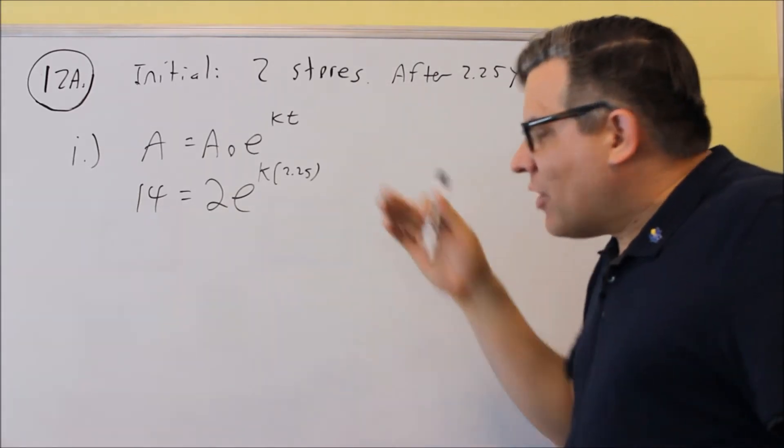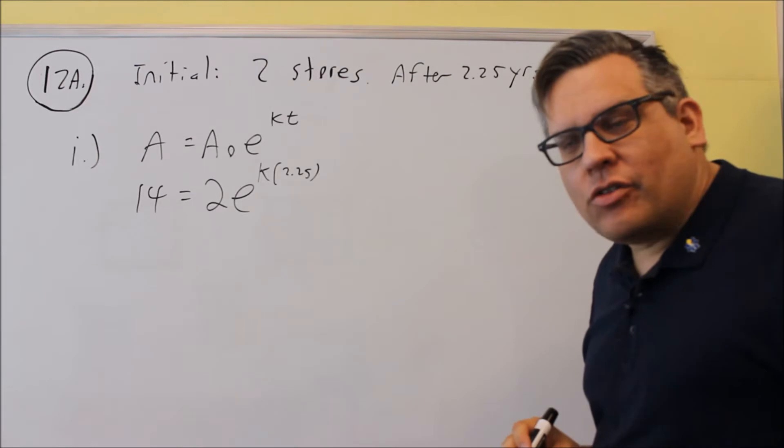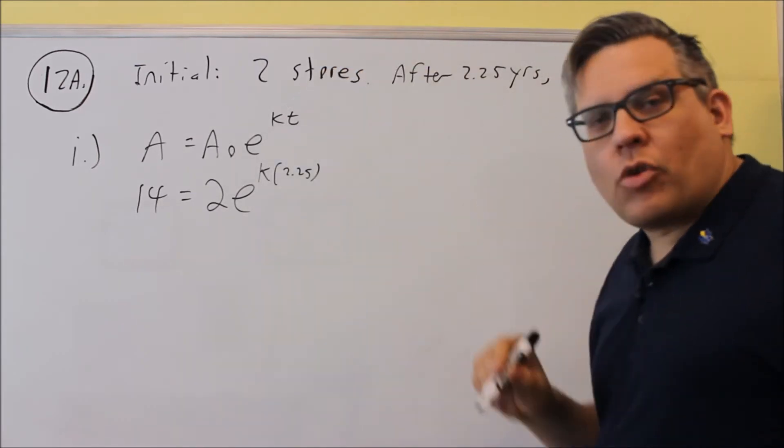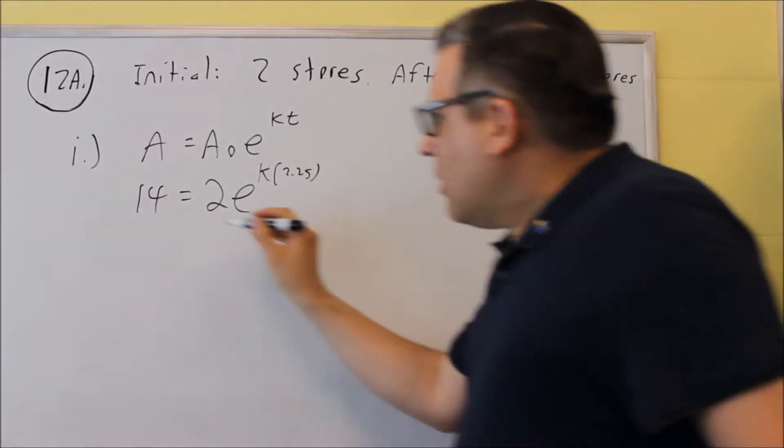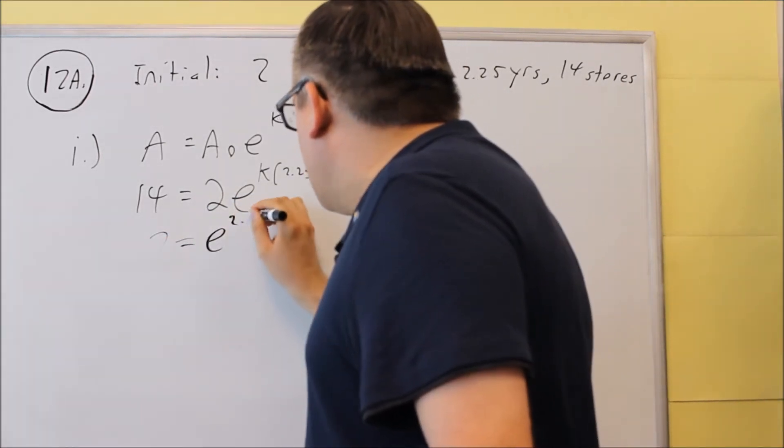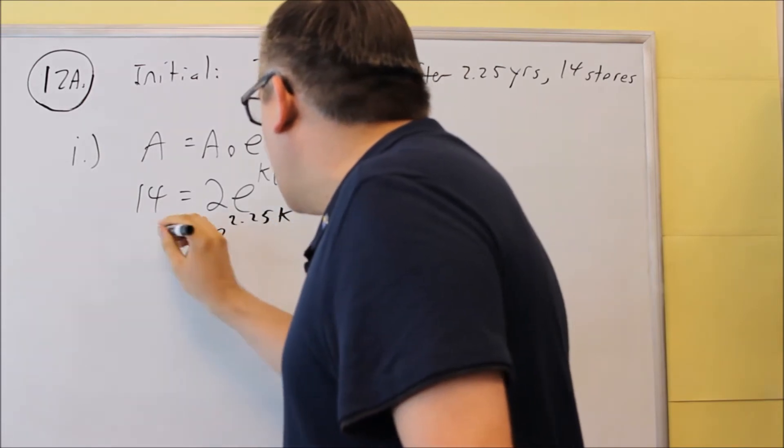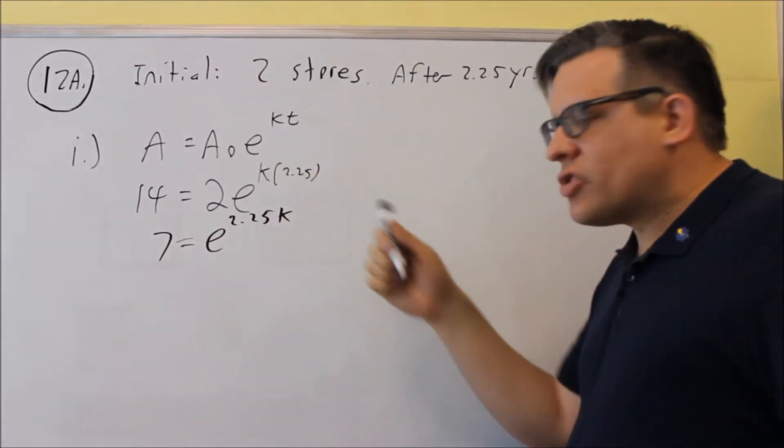So now that we have this, we want to solve for the k value. And that's what we're going to put in here, and we'll have our general growth formula. Divide both sides by 2, and we get 7 equals e^(2.25k). So that would be our first step.